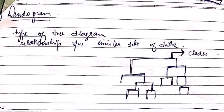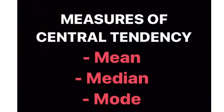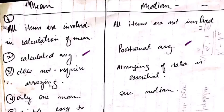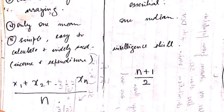Now let us look at the measure of central tendency, which is measured by three things: mean, median, and mode. Mean is basically the calculated average. We add up all the items and divide by the number of items, and we get only one mean.